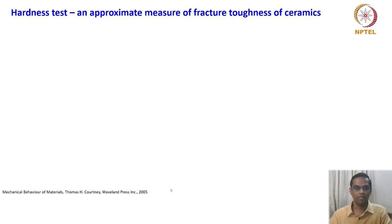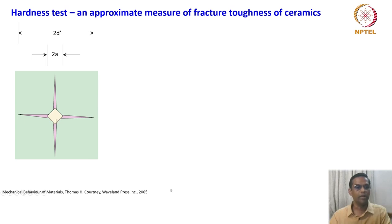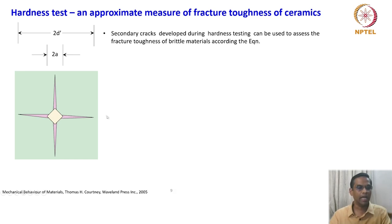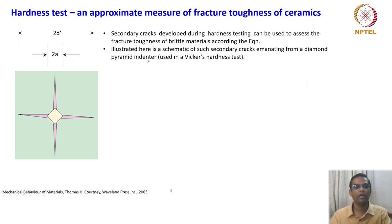We will see this when we look at fracture mechanics aspects of materials. Here, just by measuring the Vickers hardness, which makes a pyramid impression, the surface will have a square-type indentation, and what is shown in rose color are the cracks which emanate from the sharp edge corners of the indenter. Assuming this is the ceramic material, the Vickers hardness measurement produces cracks like this. Secondary cracks developed during hardness testing can be used to assess the fracture toughness of brittle materials. Illustrated here is a schematic of such secondary cracks emanating from the diamond pyramid indenter used in a Vickers hardness test.